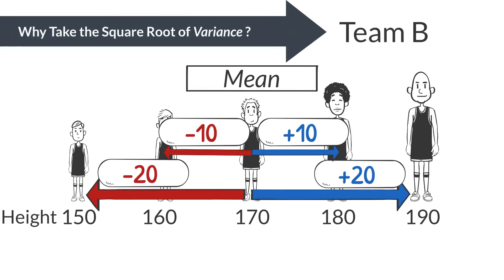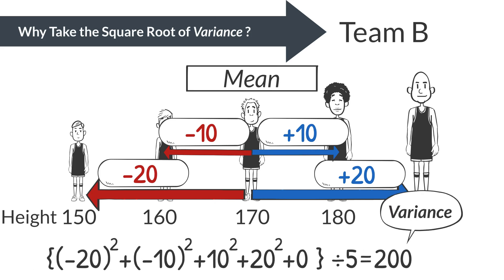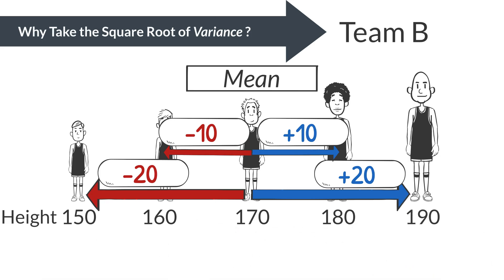Returning to Team B's example, their mean height is 170 cm, and the variance is 200, but this is in square centimeters. If we take the square root of the variance, we get a standard deviation of 14 cm.